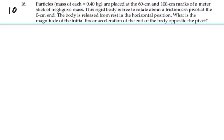Here's problem 1018. Particles, mass each 0.4 kilograms, are placed at the 60 centimeter and 100 centimeter marks of a meter stick of negligible mass. This rigid body is free to rotate about a frictionless pivot at the zero centimeter end. The body is released from rest in the horizontal position. What is the magnitude of the initial linear acceleration of the end of the body opposite the pivot?